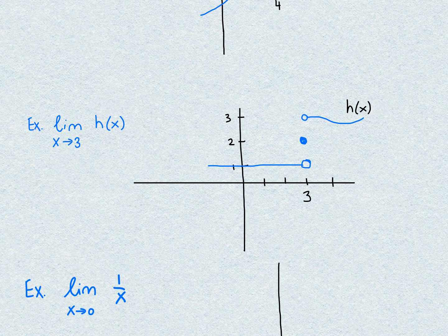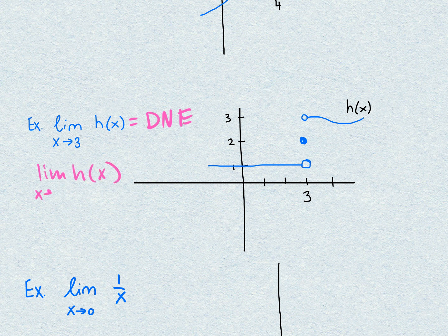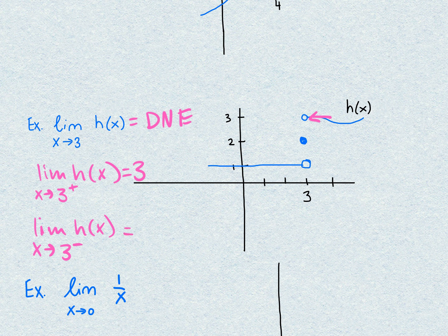In the next example, the limit of h(x) as x approaches 3: does not exist, because our graph goes to two different values as we approach 3. The limit of h(x) as x approaches 3 from the positive direction (right side) would be 3. The limit of h(x) as x approaches 3 from the negative direction (left side) would be 1.